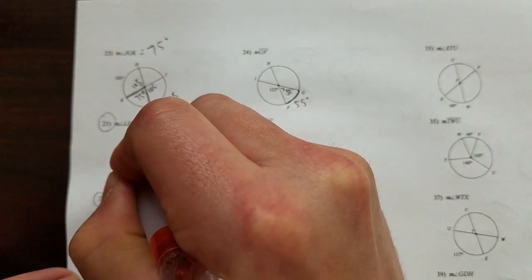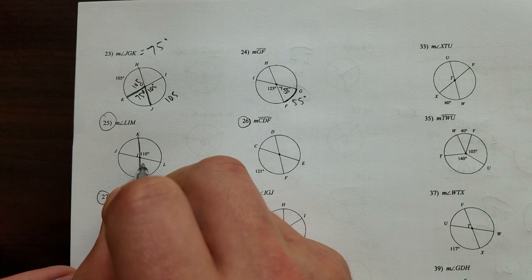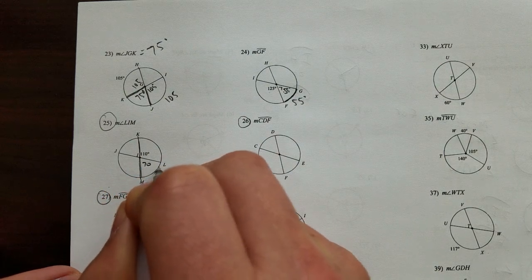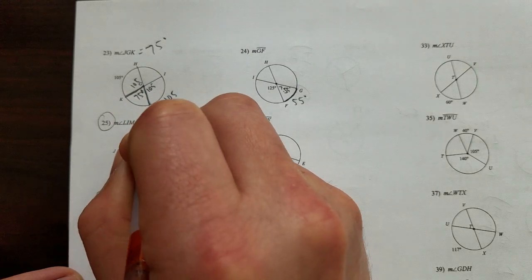Well, that is a diameter. That's 110, so 180, because that's a straight line. And minus 110 is 70 degrees, so LIM is 70 degrees.